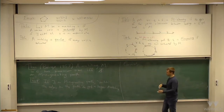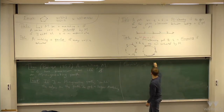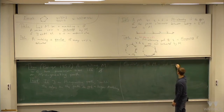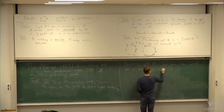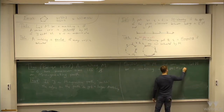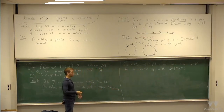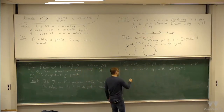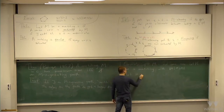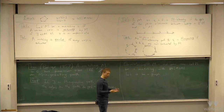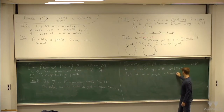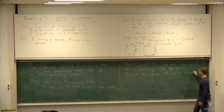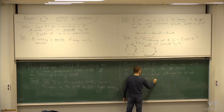For the other direction, suppose M is not maximum size and let M' be a bigger matching, so the size of M' is strictly bigger than the size of M. We define a graph H with the same vertex set as G and edge set equal to the symmetric difference of M and M'. The symmetric difference of two sets X and Y is defined as the things in X but not Y, union Y but not X — equivalently, their union minus their intersection.